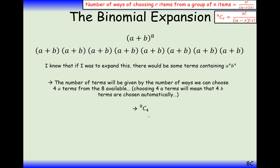What we can do is use the choose button on our calculator. For example, if you wanted the eighth row on Pascal's triangle, you would start with 8 choose 0 as the first value, then 8 choose 1, then 8 choose 2, and so on until you get to 8 choose 8, which is back to 1. The easiest way of finding the coefficients is to use this choose function.